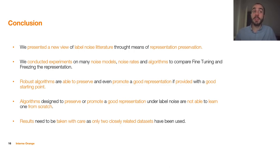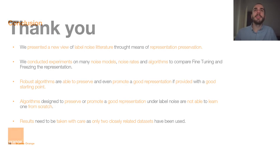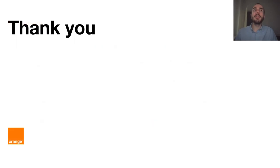In conclusion, we presented a new perspective on the noisy label literature through the lens of representation preservation. We conducted experiments across many noise models, noise rates, and algorithms to compare fine-tuning and freezing a contrastive representation. Robust algorithms are able to preserve and even promote a good representation if provided with a good starting point. However, algorithms designed to handle noisy labels are not able to learn a good representation from scratch. Results should be taken with care, as only two benchmark datasets were used. Thank you for your attention.